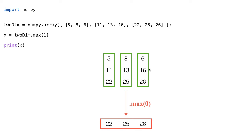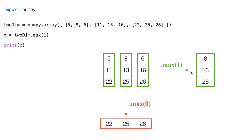Then the 11, 13 and 16 go together and we take the maximum of those values, which is 16. And then the 22, 25 and 26 go together and we take the maximum of those values, which is 26. This would be the result we get back from doing .max(1) on our array.